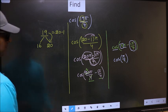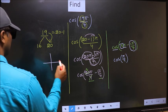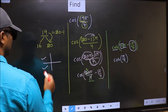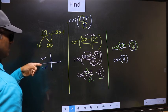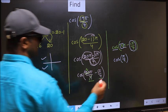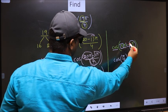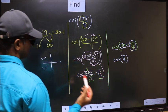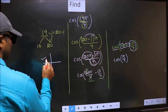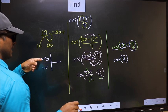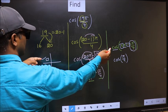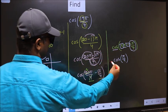So now to check which quadrant they lie in, we should look at this symbol. Here we have negative, that means the angle lies in the second quadrant. And in the second quadrant, cos is negative, so we should put negative.